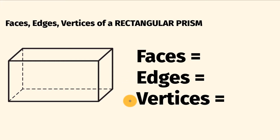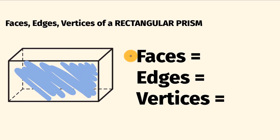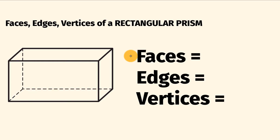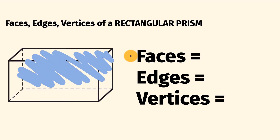So let's start with the number of faces. This is the amount of flat surfaces, like the one that we have in the front right here. Starting off, we have this one at the front here, we have one at the back, which is there.